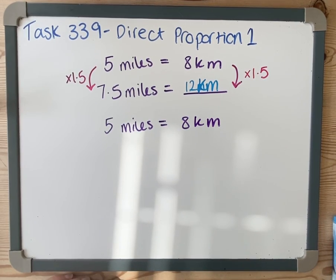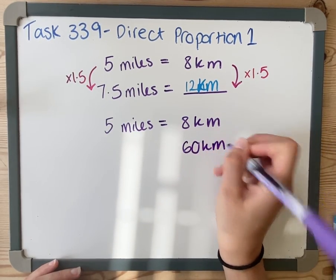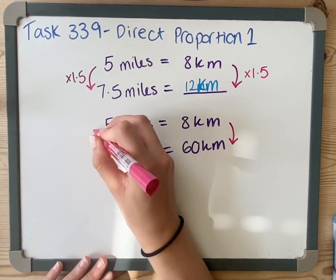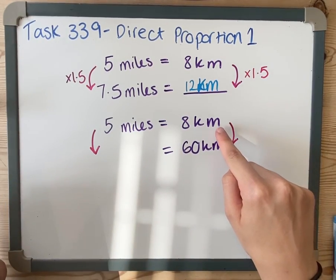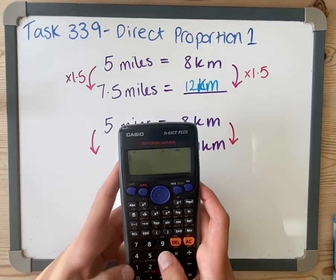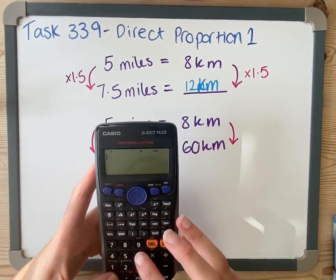I've been asked to convert 60 kilometers into miles. Same thing again: the relationship here has got to be the same, so I've got to work out what do I multiply 8 by to get to 60. To do that, I use my calculator. I'm working out what 8 times something is 60.